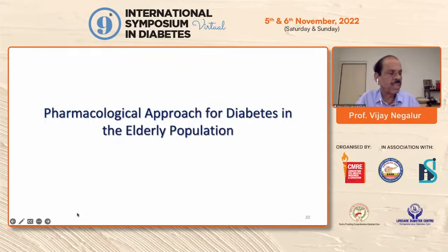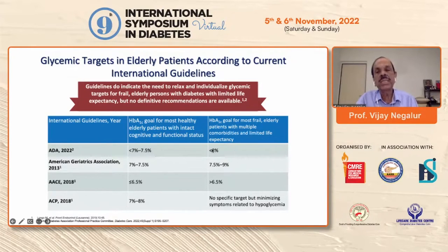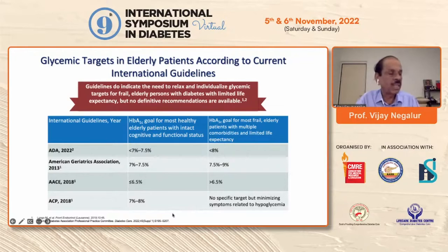Regarding the pharmacological approach, various guidelines say you need to tailor treatment to the patient's need. If the patient is healthy, you can maintain good glycemic control. If the patient is frail with multiple comorbid conditions, loosen the control to an HbA1c below 8%. The American Geriatrics Society says between 7.5% to 9%, the AACE maintains above 6%, and the ACP says 7% to 8%. There are no specific targets for frail elderly populations.